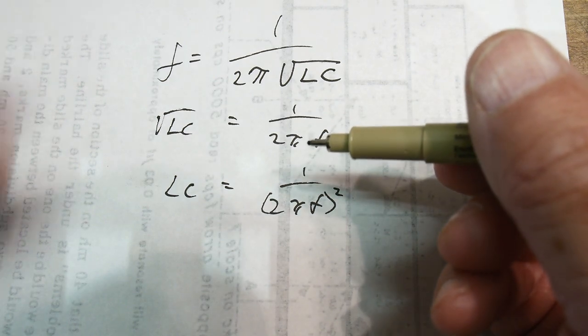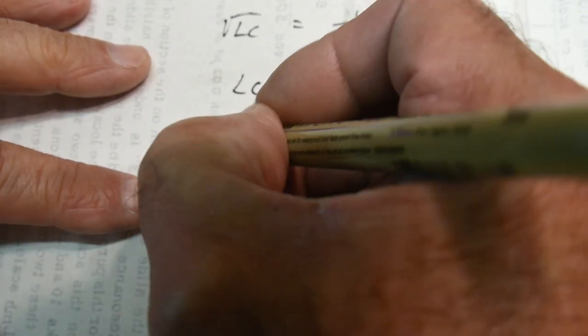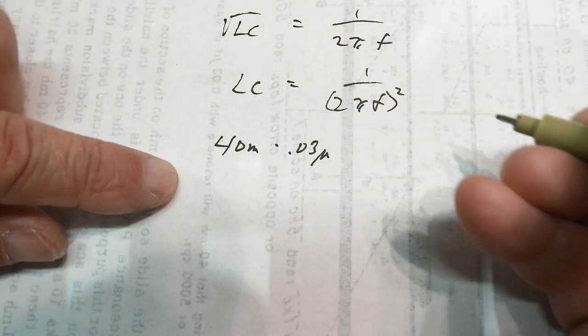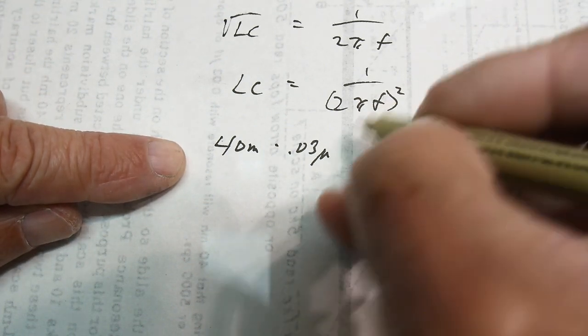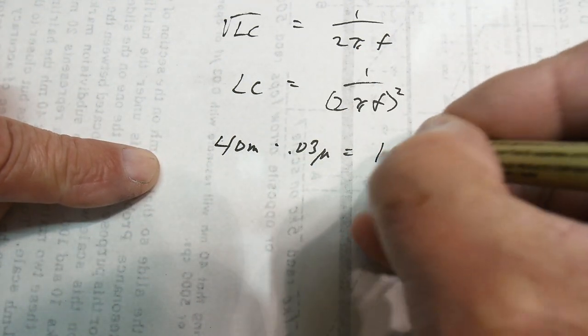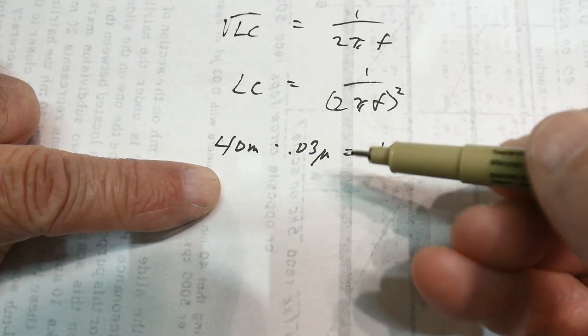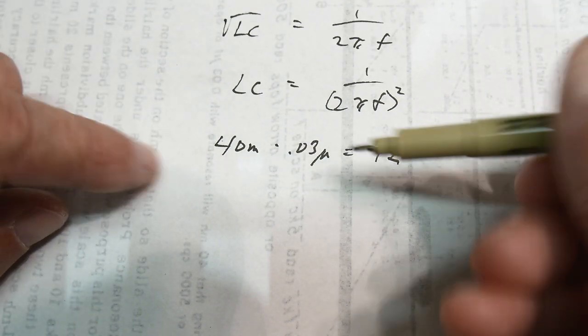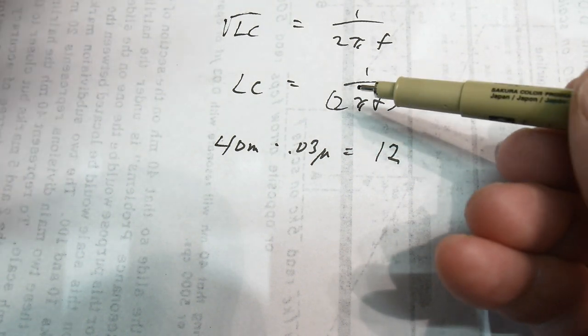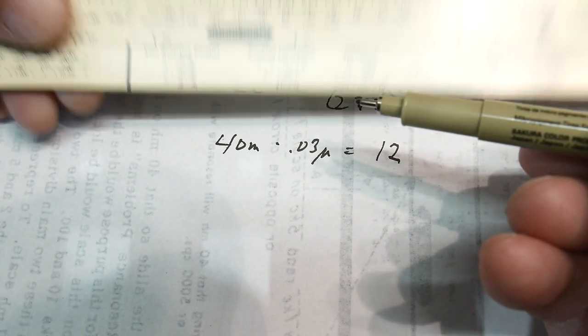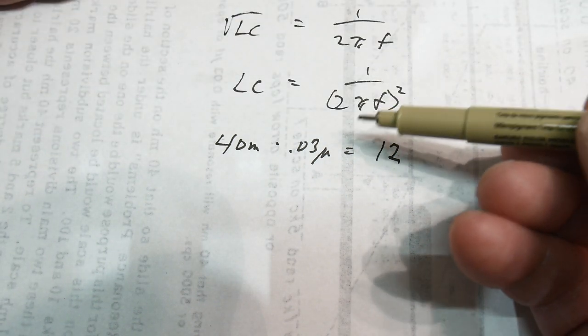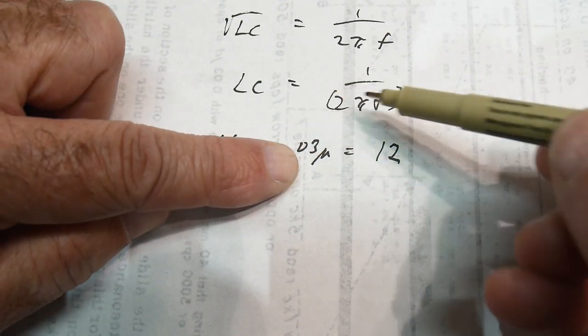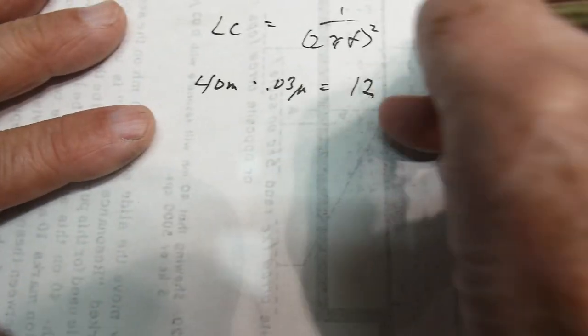But we need to know what L and C are. And we know that we have 40 millihenries and we have 0.03 microfarads. And so, we can just look at this and know it's going to be the number 12. Four times three is 12. And then you can worry about all the decimal points. In slide rule days, the decimal points were always kept in your head. We already know from our very quick calculation in the back, our number is going to be around 5,000. So, we don't even need to figure anything out. All we need to know is the number 12. We know that 12 equals this.